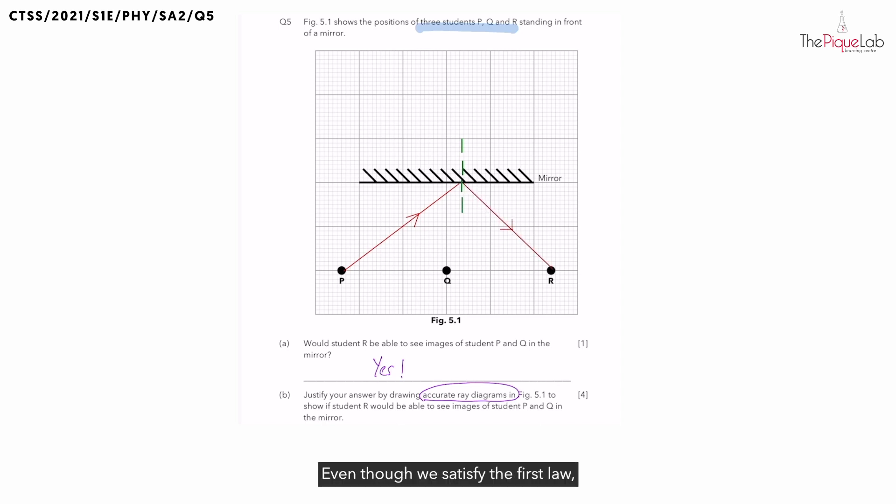Even though we satisfy the first law, which is all the rays and the normal lying on the same plane at the point of incidence, it is very difficult for us to ensure that we meet the second law. Can you still recall what was that? The incident and reflected angles must be equal. So let me erase this so I can show you how to do an accurate ray diagram.